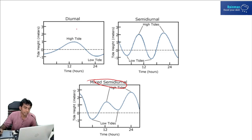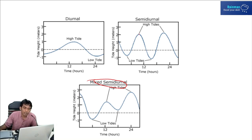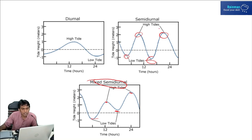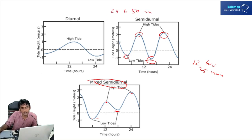If in one day there is only one high tide and only one low tide, that is called a diurnal tide. In the case of semi-diurnal tide, there are two high tides and two low tides. In mixed semi-diurnal tide, the level of high tides may not be the same, and similarly the low tides are also not the same. The time gap between high tides in a semi-diurnal tide is 12 hours 25 minutes, while in a diurnal tide one high and one low tide occurs in 24 hours 50 minutes.